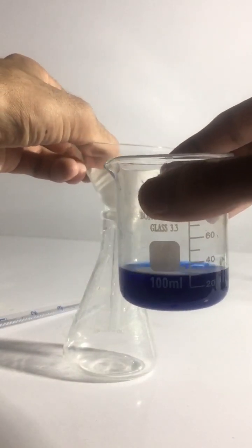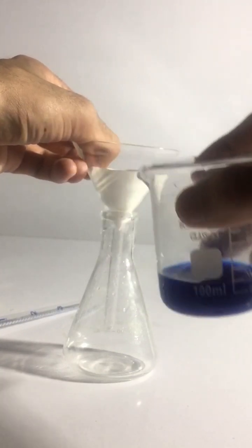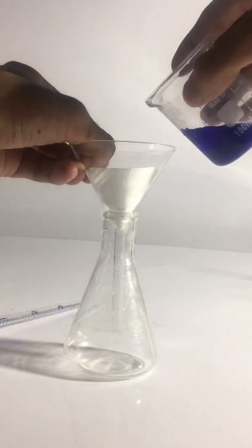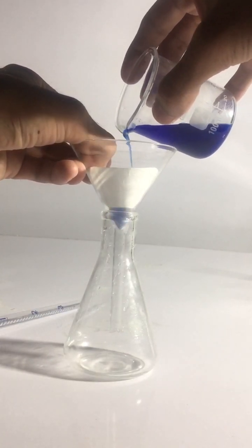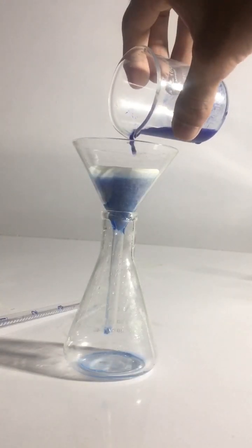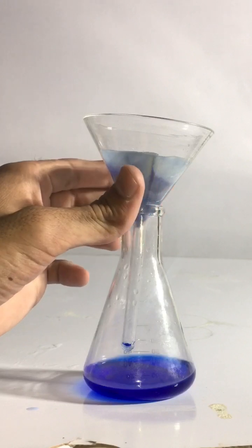Now the already prepared compound, you can see, that is tetra amine diaqua copper 2-sulfate compound. And you will see that compound will remain on the filter paper and the filtration process is complete.